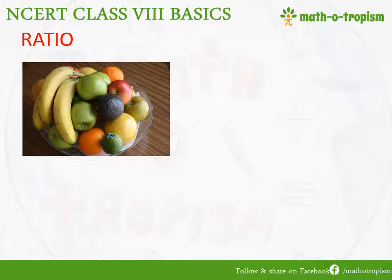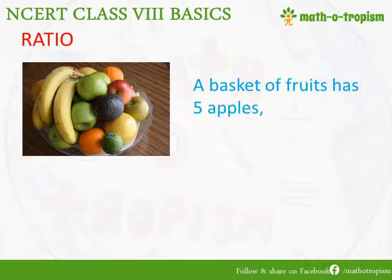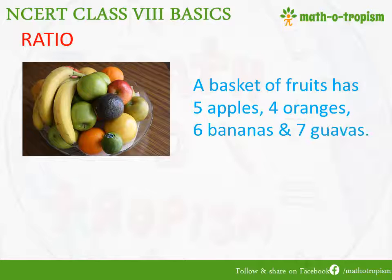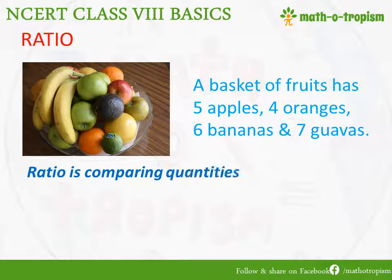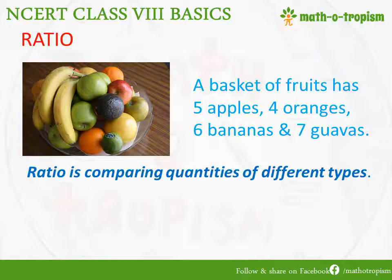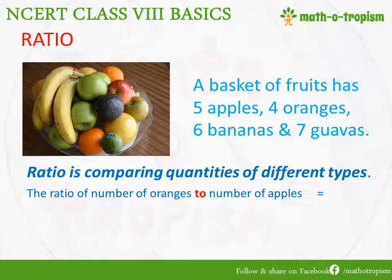We will start with ratio. Let us assume that we have a basket of fruits and it has 5 apples, 4 oranges, 6 bananas, and 7 guavas. When we are talking about ratio, ratio is just comparing quantities of different types. Let us find the ratio of number of oranges to the number of apples.